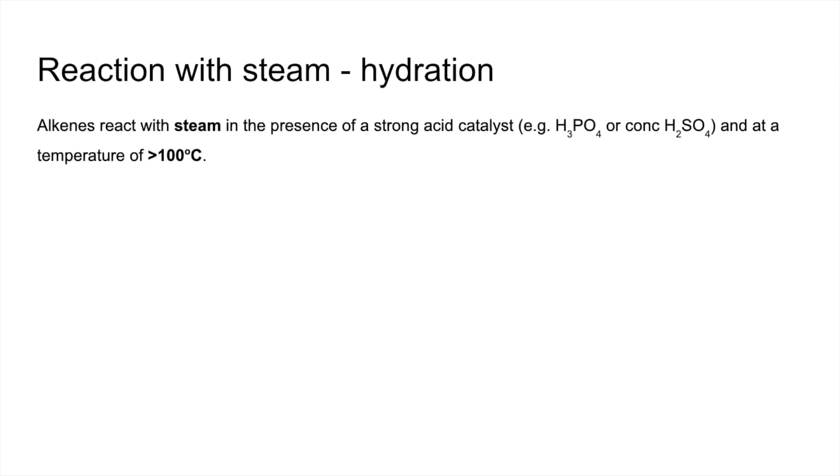So alkenes react with steam in the presence of a strong acid catalyst. So there's a couple of examples you could use. Phosphoric acid, H3PO4, or concentrated sulfuric acid. And there needs to be a temperature of greater than 100 degrees C, because obviously you've got to turn that water into steam.